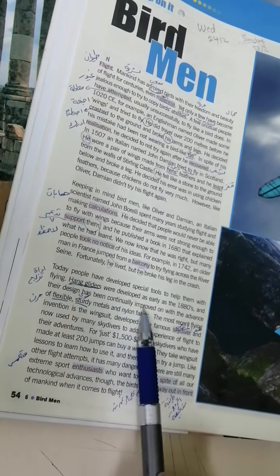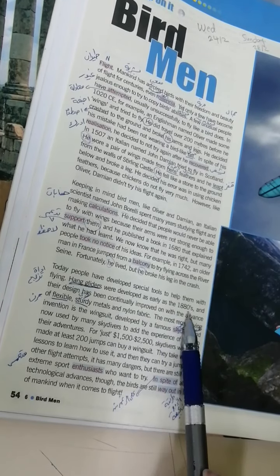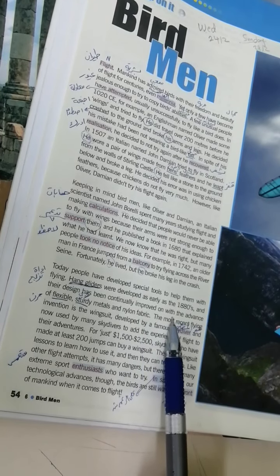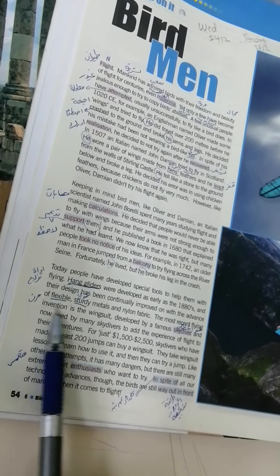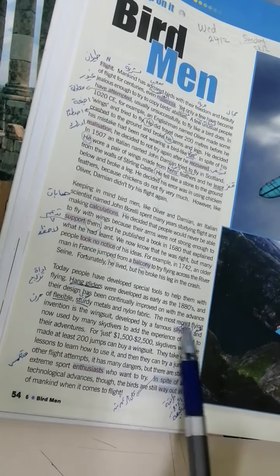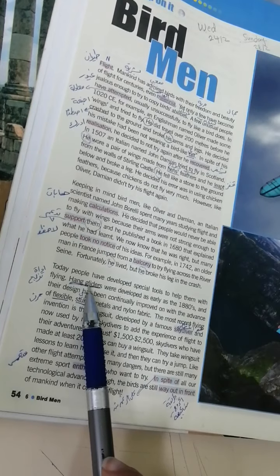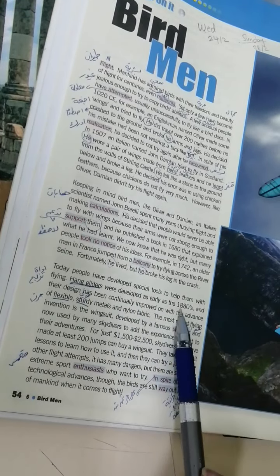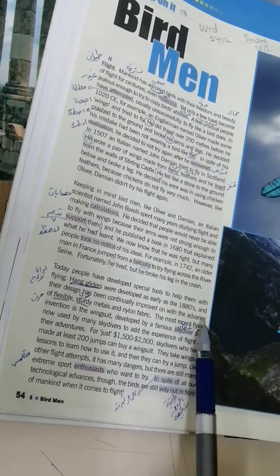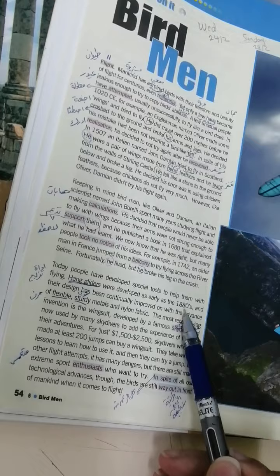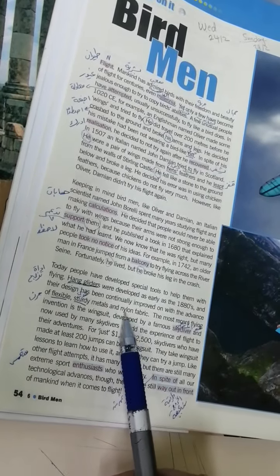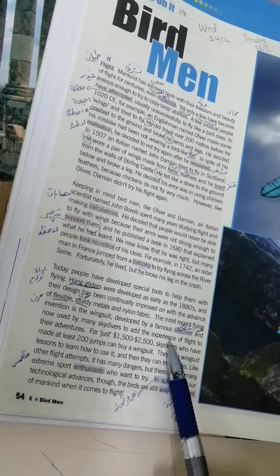Were developed as early as the 1880s and their design has been continually improved on with the advance of flexible sturdy metals and nylon fabric. معناته هنا بيحكيلي انو هاي ادوات التزلج هي طوروها بالالف وتمانمية وتمانين واطعم له الديزاين لالها واستمروا بتطويره لاشياء متقدمة اكتر مرنة قوية يعني من معدن قوي ومن نايلون استخدموا برضو في النايلون.